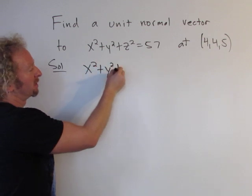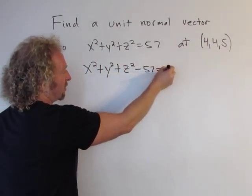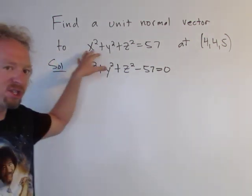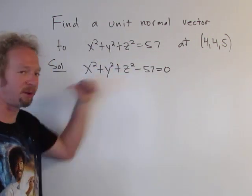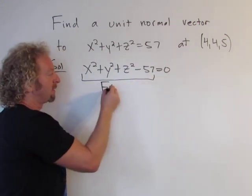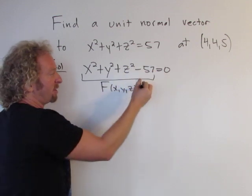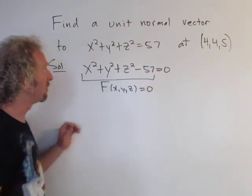So we took the equation of a sphere and now we're treating it a little bit differently. We're going to think of this as big F of x, y, z, and if this whole thing is big F then it's equal to zero.